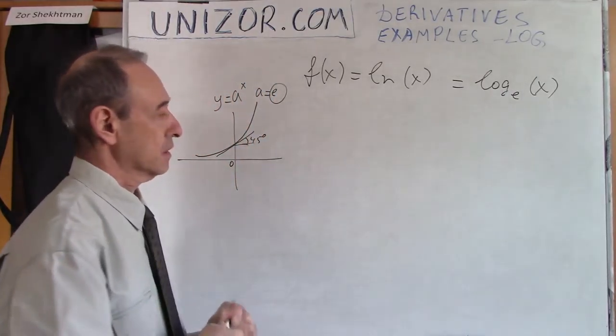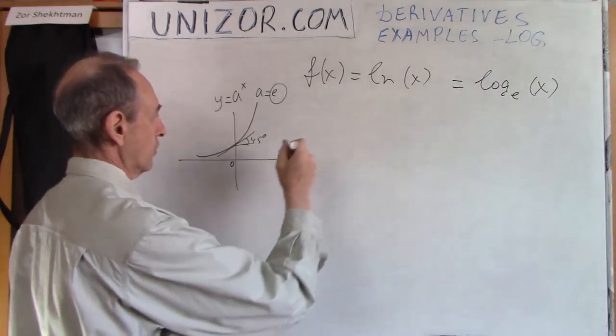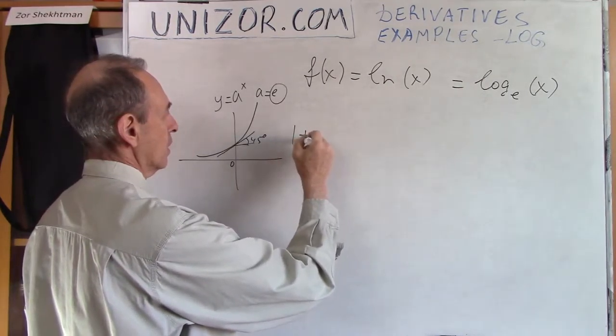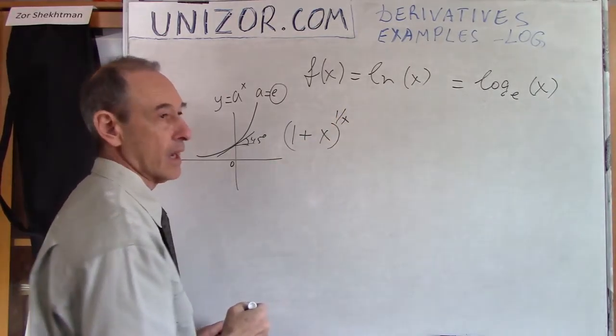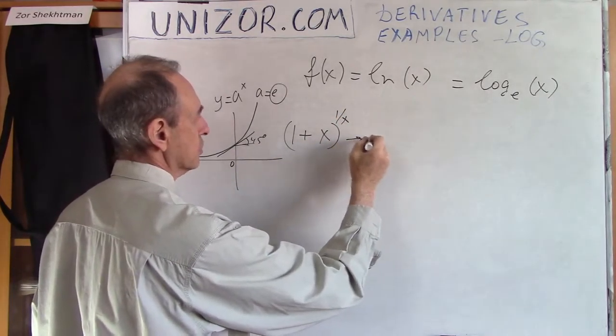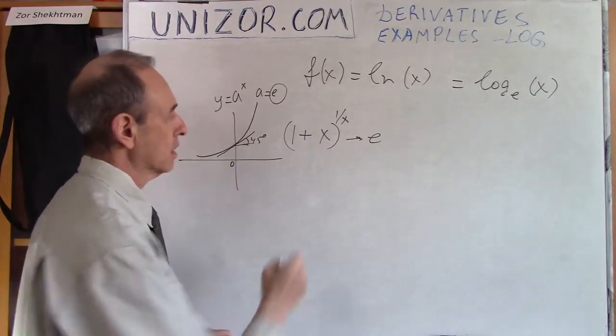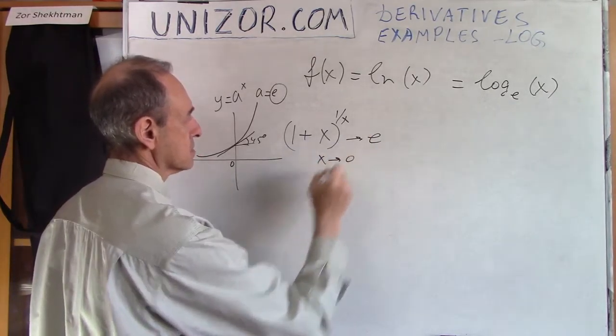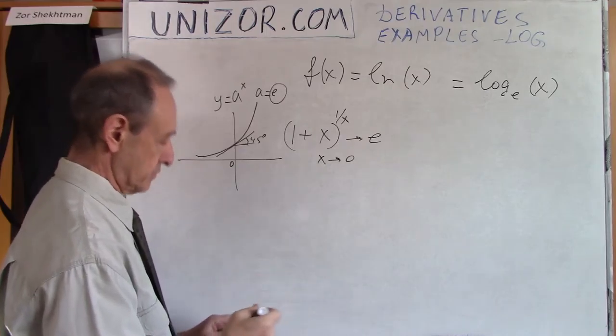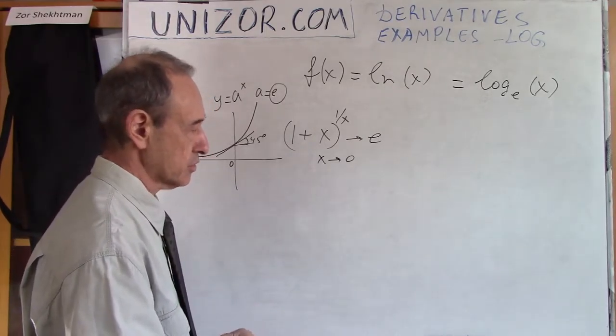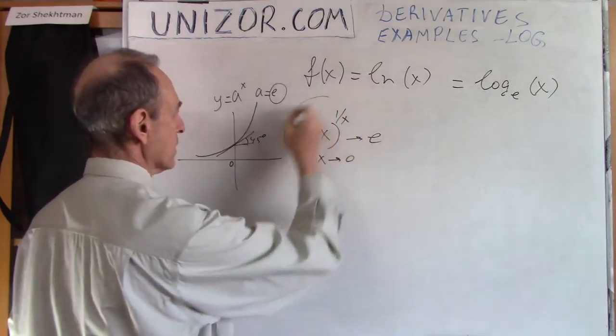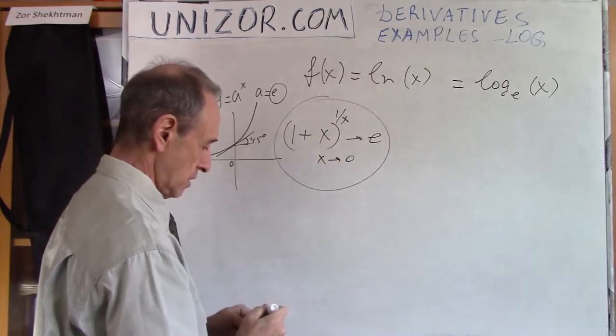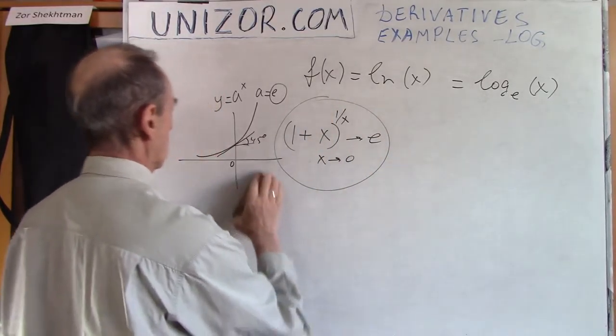There is an amazing limit which we were considering before. 1 plus x to the power 1 over x goes to number e as x tends to 0. That's another definition of e. They're all equivalent to each other. Remember this one actually, we will be using it in this lecture.